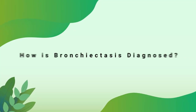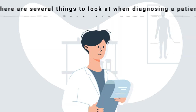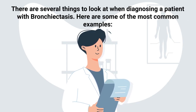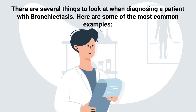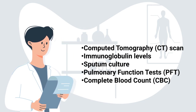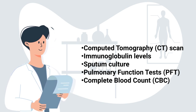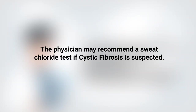When diagnosing a patient with bronchiectasis, there are several things to look at. Common diagnostic tools include a CT scan, immunoglobulin levels, sputum culture, pulmonary function test, and a complete blood count. The physician may also recommend a sweat chloride test if cystic fibrosis is suspected.